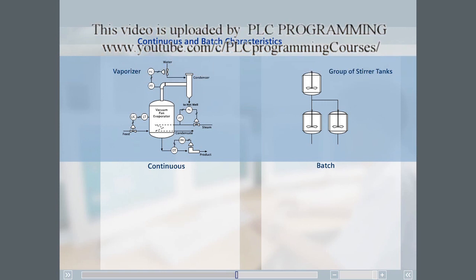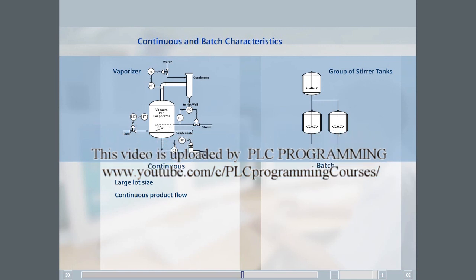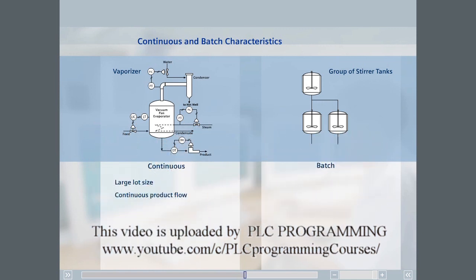A continuous process produces large amounts of a product in a continuous product flow. The longer the process runs, the more product is produced.